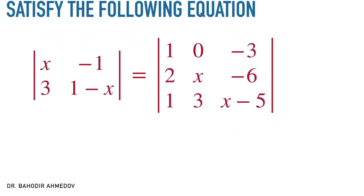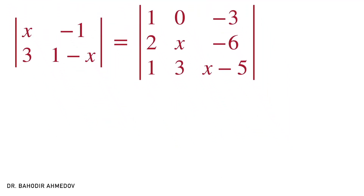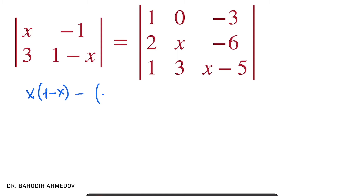Let's start with the left-hand side part. In order to find the determinant of this matrix on the left-hand side, I'm just going to multiply its diagonals to each other. It's going to be x times (1 minus x), minus (minus 1 times 3), which equals x minus x squared plus 3. That's going to be the determinant of the left-hand side part.